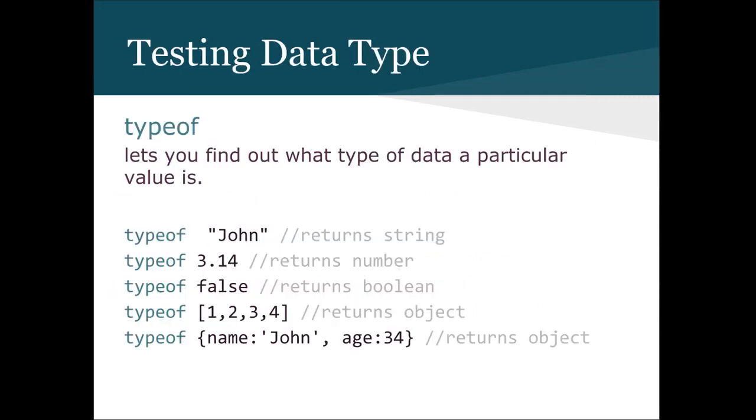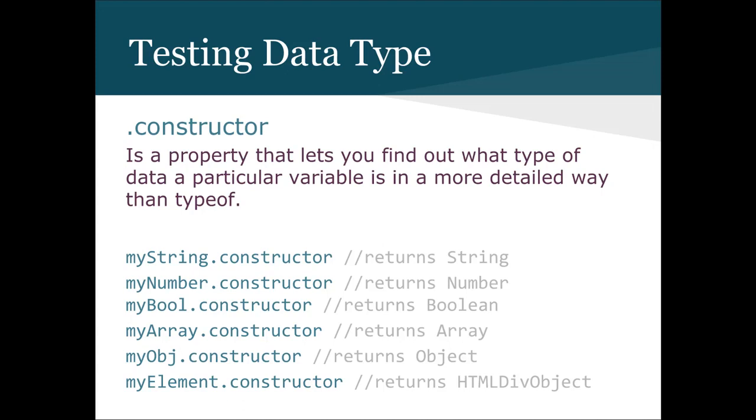typeof lets you find out what kind of data a value is. typeof is less specific than constructor. I like using constructor as a means for testing data types. The constructor property lets you find out what type of data a particular variable is in a more detailed way than typeof. A string returns string, number returns number, boolean returns boolean, an array returns array. A specific type of object like an HTML div will return HTML div. It's going to tell you if it's a paragraph or an image.